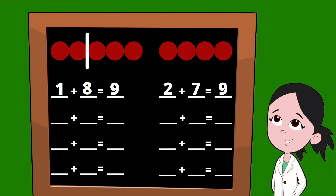Now let's slide that line over one more time to the right to get our next set of partners. To the left of our line, we now have three dots, so our first partner is the number three. To the right of our line, we have six dots, so our second partner is the number six. Three plus six equals nine.